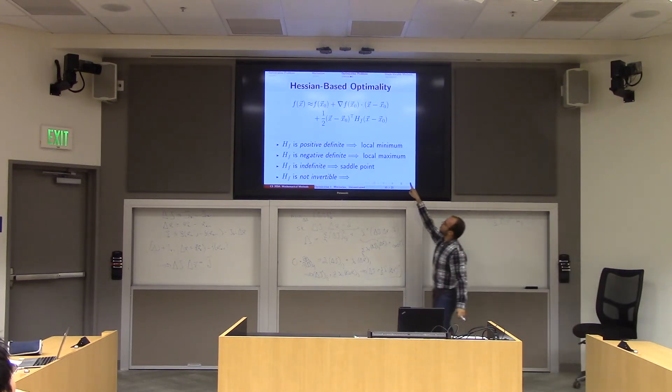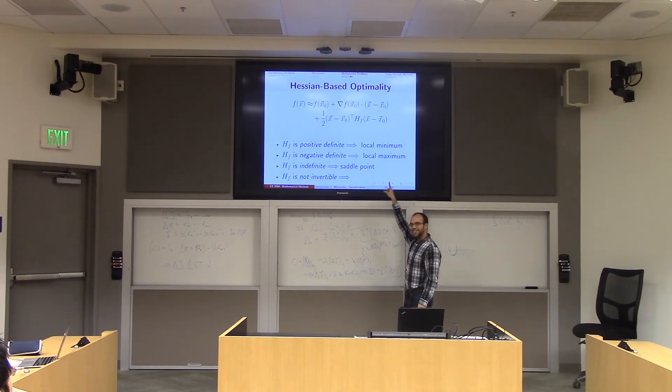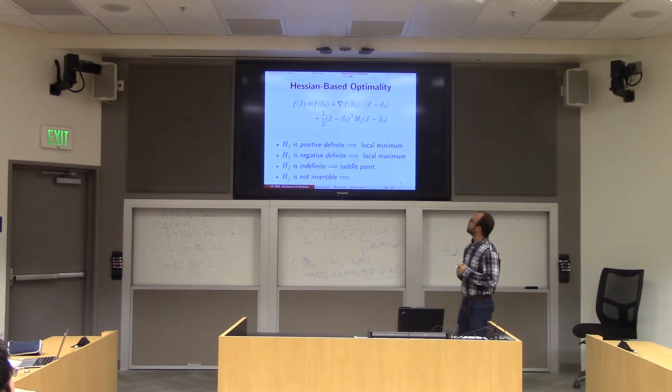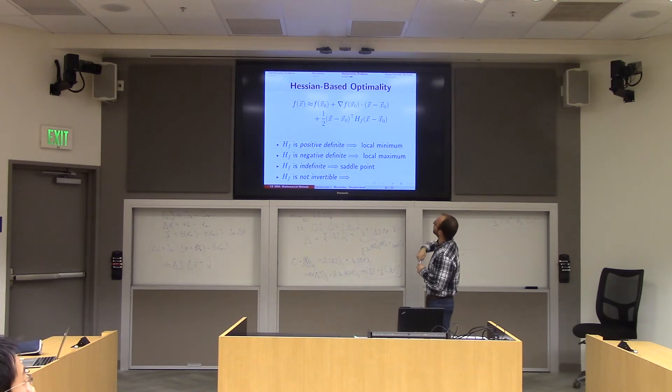So in particular, what this says is if I move away from x0, then what happened to f? It increased. And so this indicates that if your Hessian is positive definite, you're at a local minimum. Because we also know at a critical point that the second term is equal to 0. The gradient is 0.